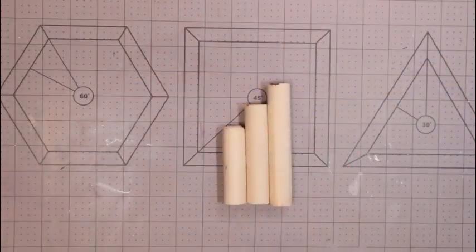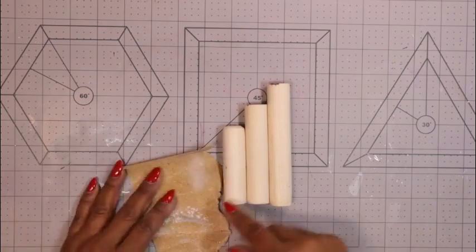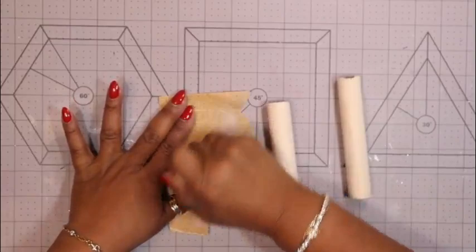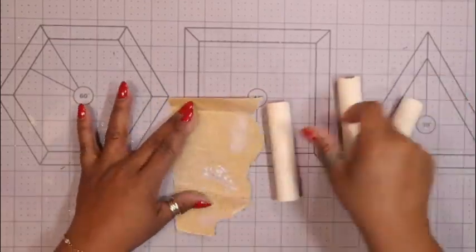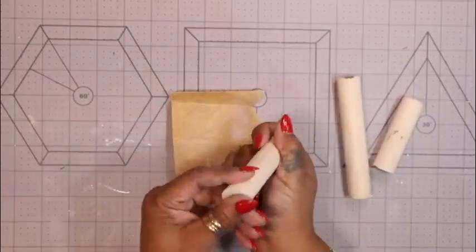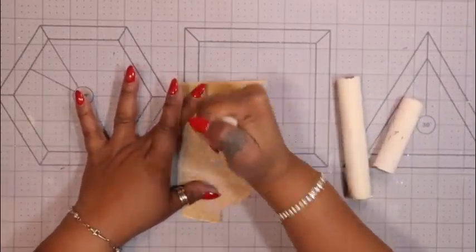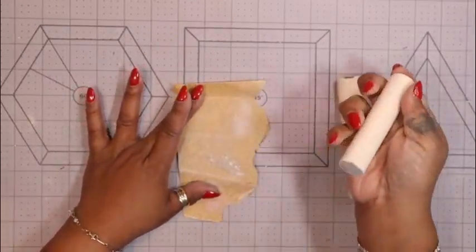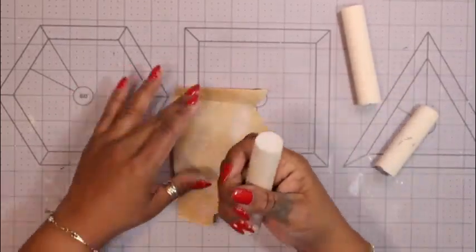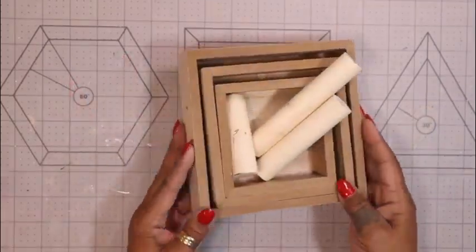So here you see I finally have my three pieces, and I took a piece of sandpaper, and I made sure that each one of them was leveled down so that we could make sure to try to get this level on the bottom so that our tiered tray doesn't have much tilt or tilt at all, if at all possible. I just repeated that step on all ends and made sure that they were level.